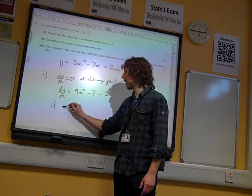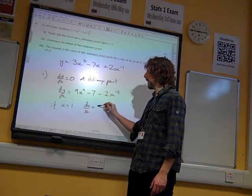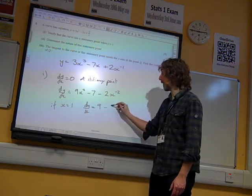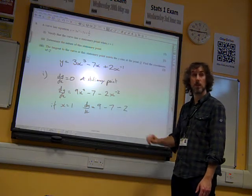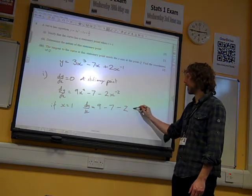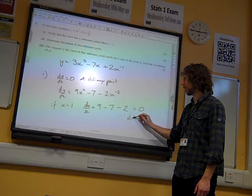So if x equals 1, dy by dx is 9 times 1 squared minus 7 minus 2 over 1, and 9 minus 7 minus 2 does equal 0, therefore stationary at x equals 1.